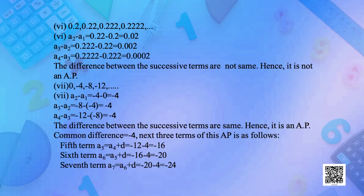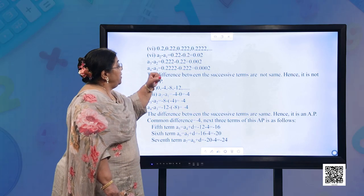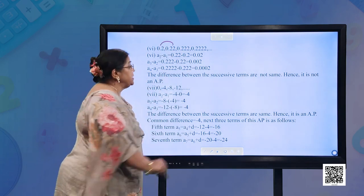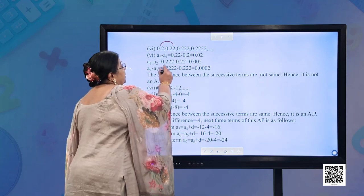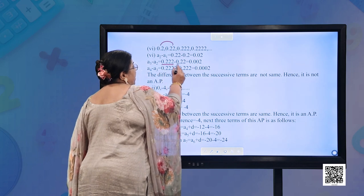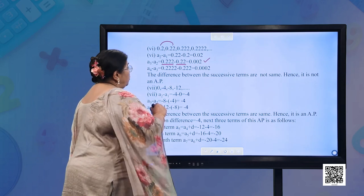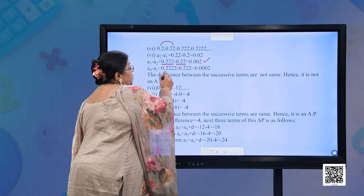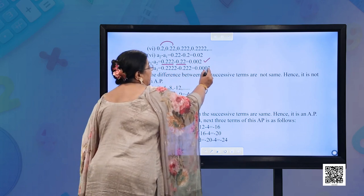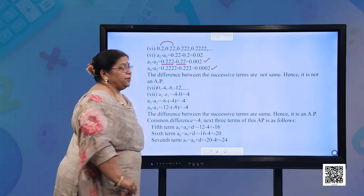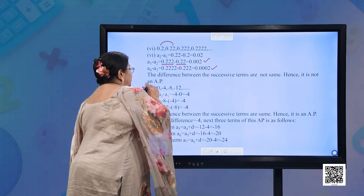Part (f): 0.2, 0.22, 0.222, 0.2222. A2 − A1 = 0.22 − 0.2 = 0.02; A3 − A2 = 0.222 − 0.22 = 0.002; A4 − A3 = 0.2222 − 0.222 = 0.0002. The differences are not the same. Therefore, it is not an AP.